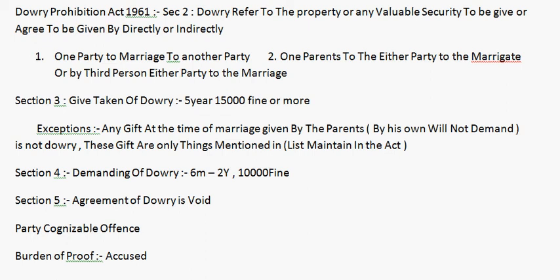Hello guys, so today we are starting with a new video on the Dowry Prohibition Act 1961. First of all, 'dowry' ka matlab simple words mein — the dowry. According to Section 2, dowry refers to any property or any valuable security to be given or agreed to be given.